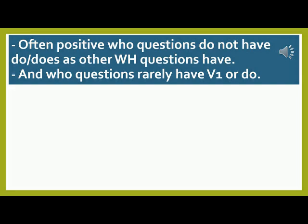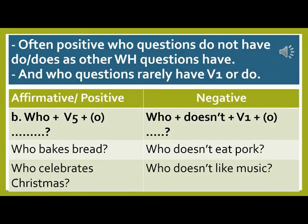Often positive WHO questions do not have 'do' or 'does' as other WH questions have, and WHO questions rarely have V1. This is Type B of WH question. Affirmative structure: Who + V5 + sometimes object. Example: 'Who bakes bread?' Another example: 'Who celebrates Christmas?' Negative structure: Who + doesn't + V1 + sometimes object. Example: 'Who doesn't eat pork?' Another example: 'Who doesn't like music?'